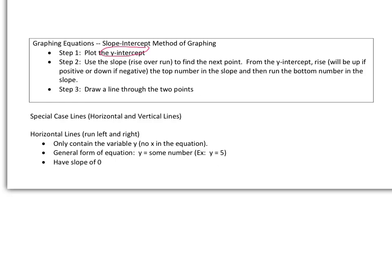We will first of all plot the y-intercept. We will then use the slope to find the next point, and we use the slope starting at the y-intercept. Don't forget, we don't go to the origin and use slope. We go to the y-intercept and use slope. And then it will go up if it's positive and down if it's negative. And the funnest part is to draw the line, in other words, connect the two dots.